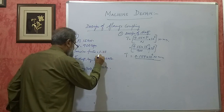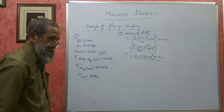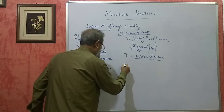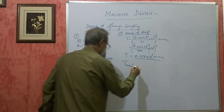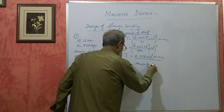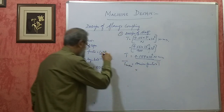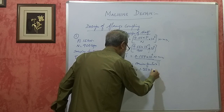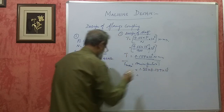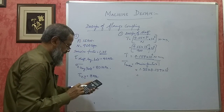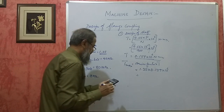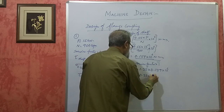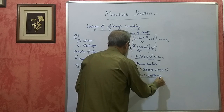He says take service factor as 1.35. The meaning is the maximum torque is 35% more than the mean torque. So T max equals service factor into T: 1.35 into 0.159 into 10 to the power of 6, which gives 0.22 into 10 to the power of 6 Newton mm. So I got T max.